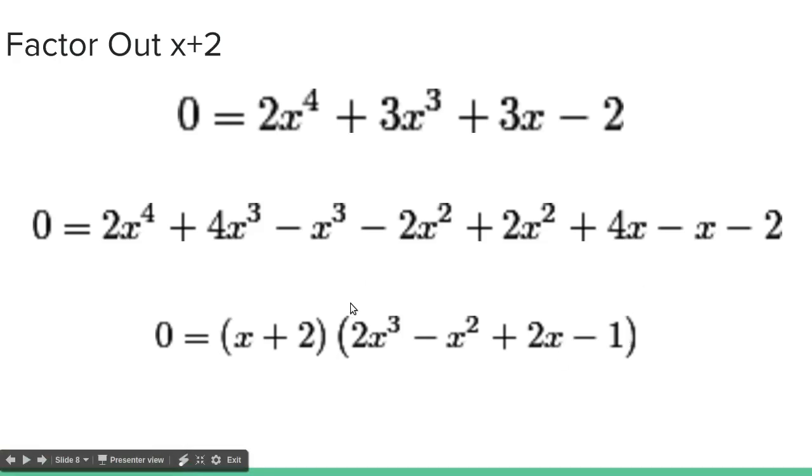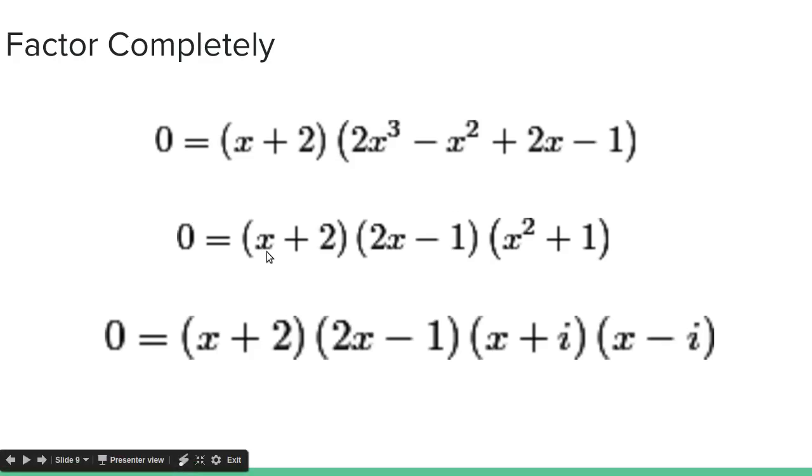Okay? So now we have 2x cubed minus x squared plus 2x minus 1. So it goes 2, negative 1, 2, negative 1. Here is a very clear factor by grouping thing, because we can factor out 2x minus 1 from the 2x cubed minus x squared, and the 2x minus 1. And that gives us x plus 2, 2x minus 1, and then x squared plus 1.